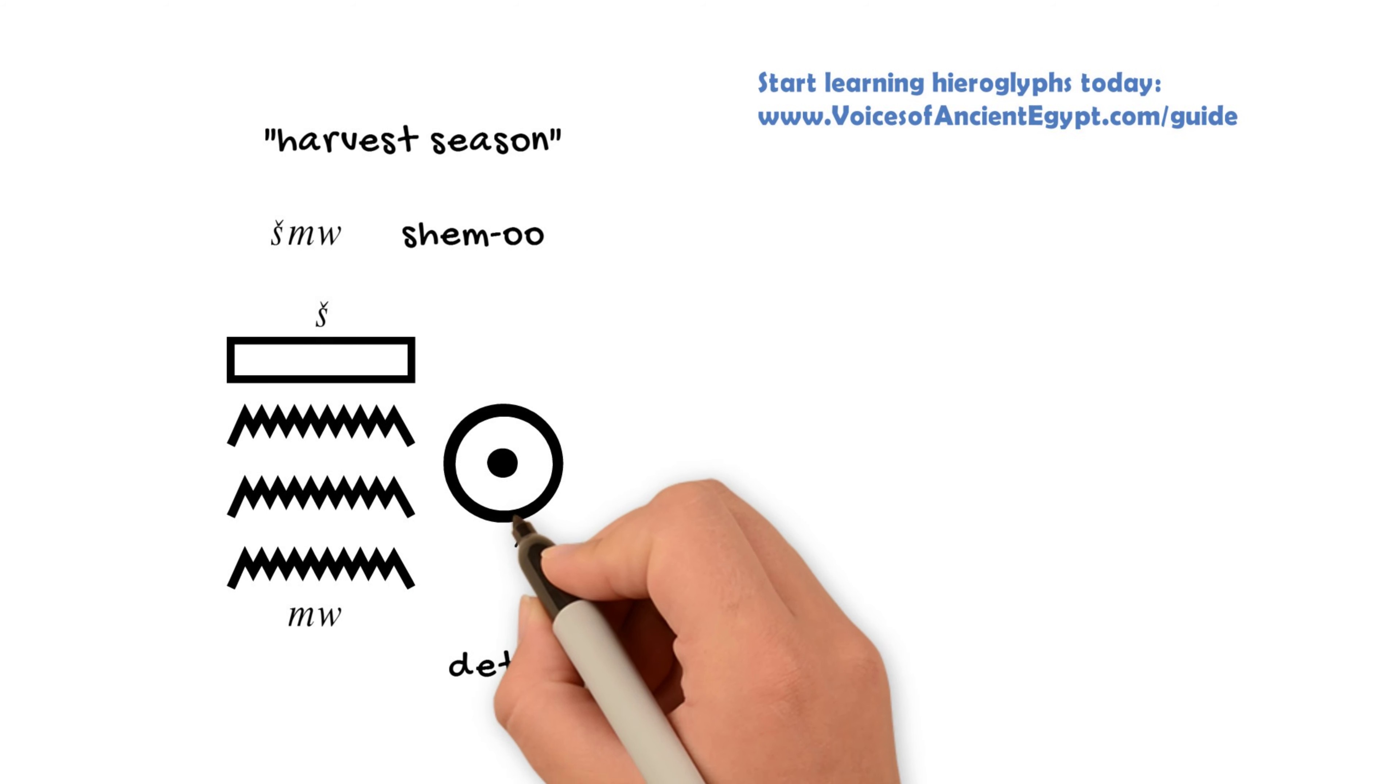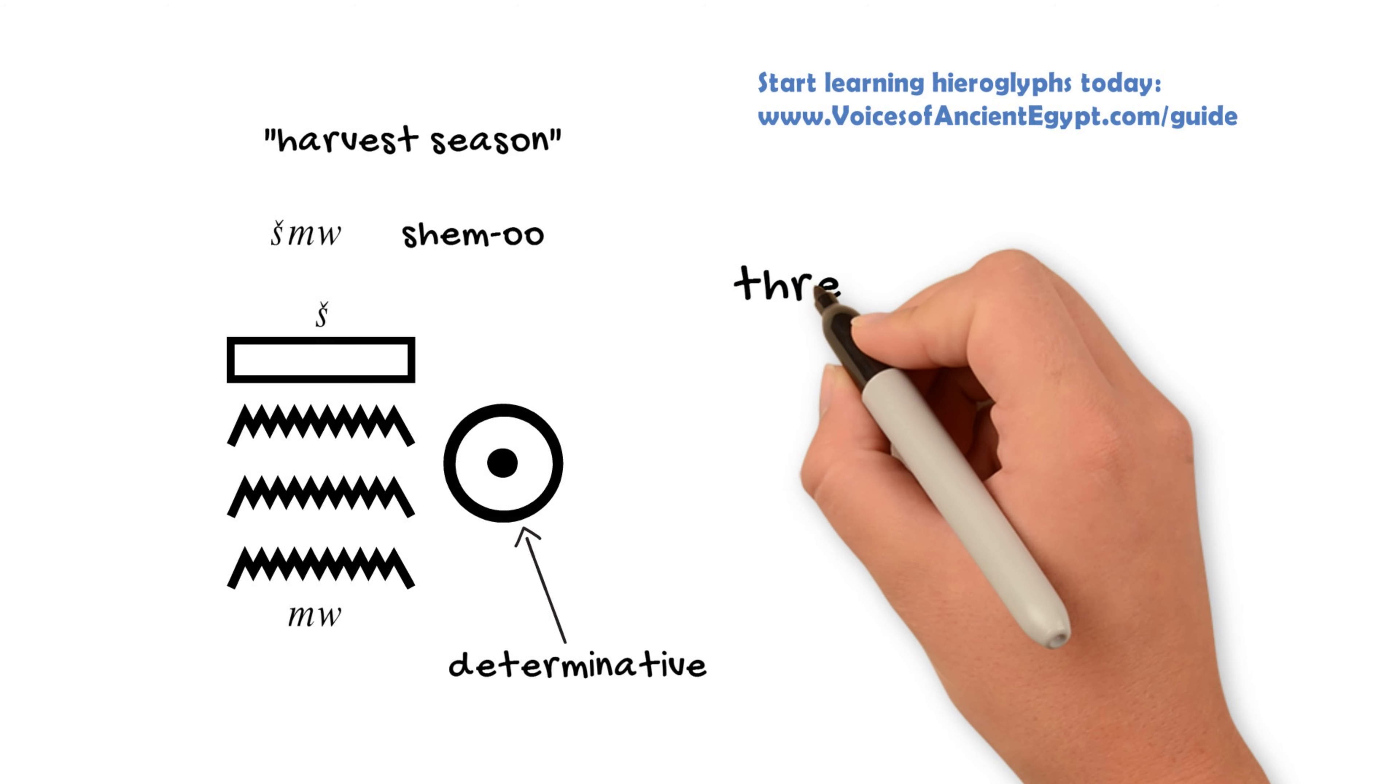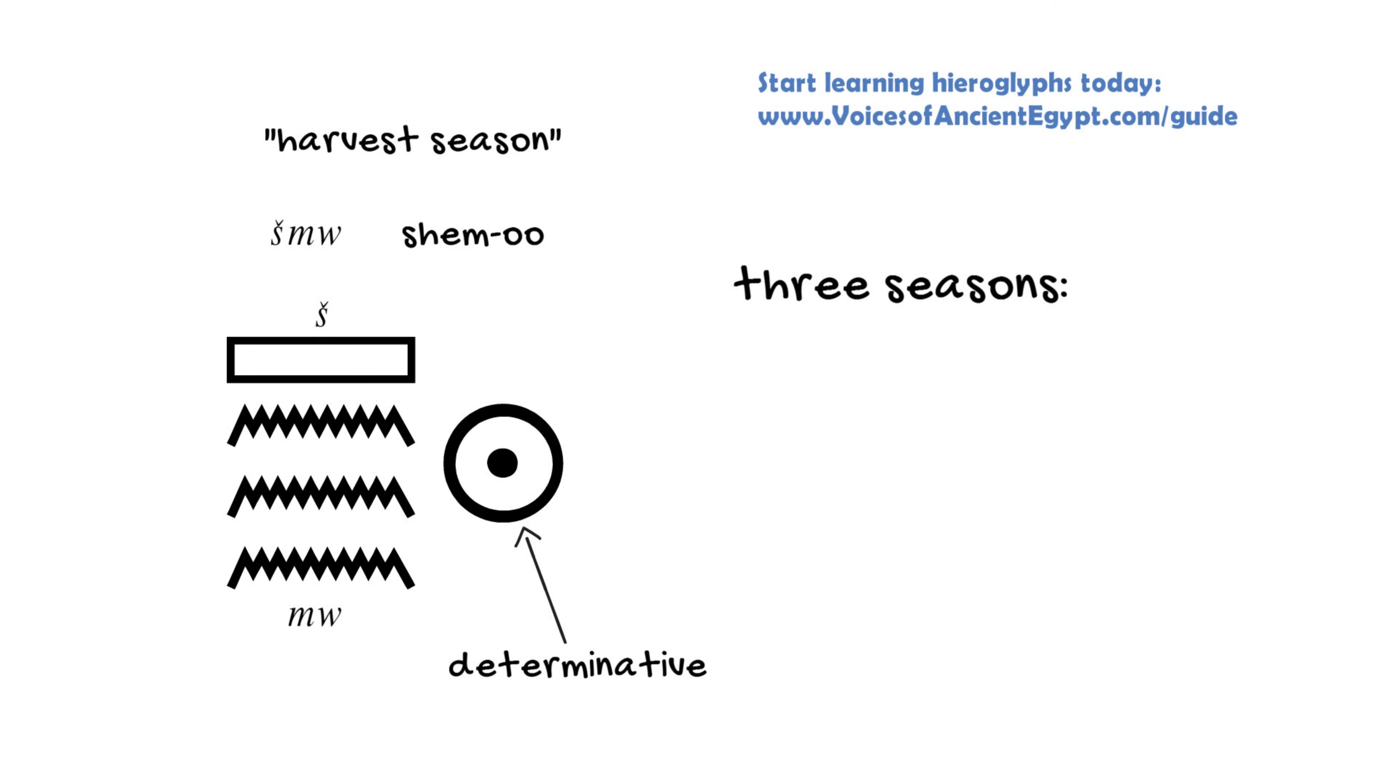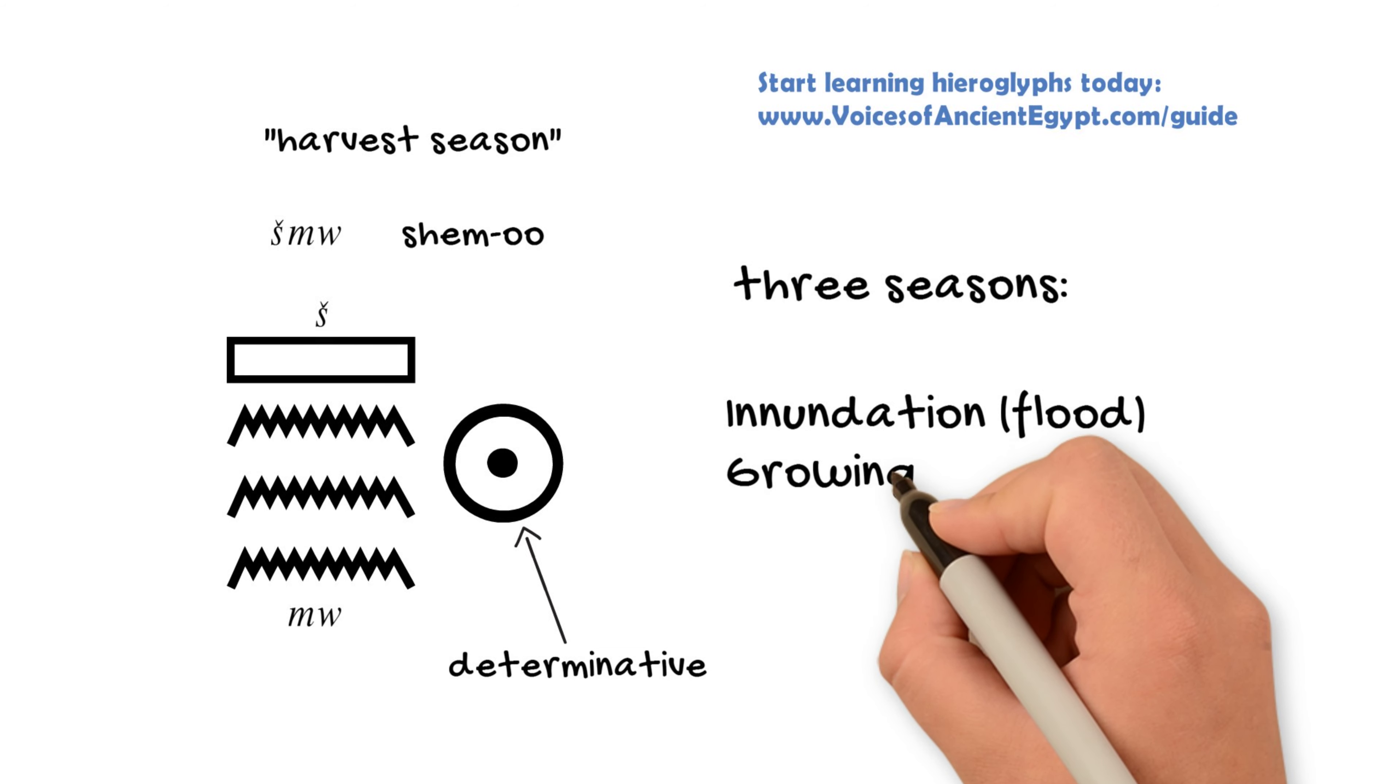The solar calendar in ancient Egypt had three seasons. This one, shemu, is the harvest season. So this would have been late spring to early summer based on the way agriculture worked in ancient Egypt.